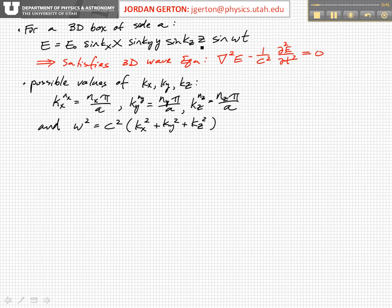Sine kx x, sine ky y, and sine kz z times sine omega t. So these kx, ky, and kz values are just the different indexed wave numbers along the different spatial directions x, y, and z.